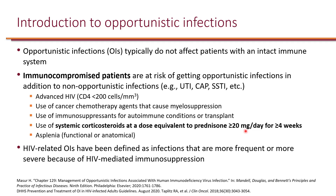And asplenia. The spleen has the function of filtering the blood — specifically, any encapsulated bacteria will be removed by the spleen, including pneumococcal species as well as Haemophilus influenzae. Asplenia could be either functional asplenia — for example, patients with sickle cell disease will have a non-functioning spleen — or anatomical, meaning surgically removed, i.e., splenectomy.